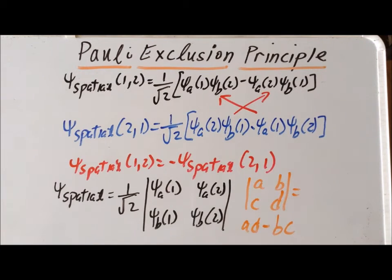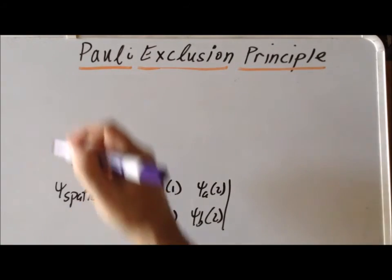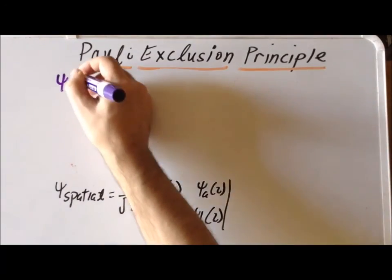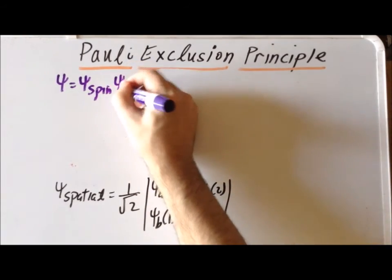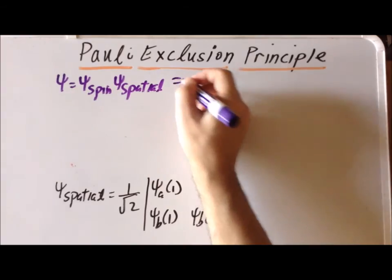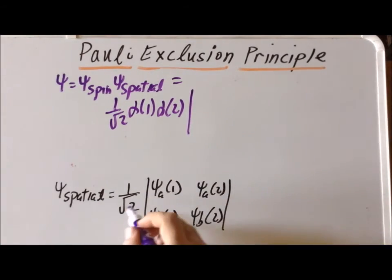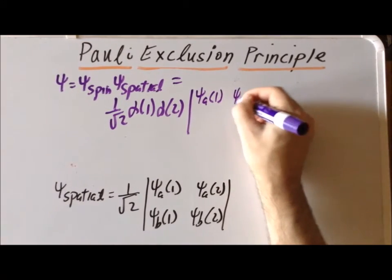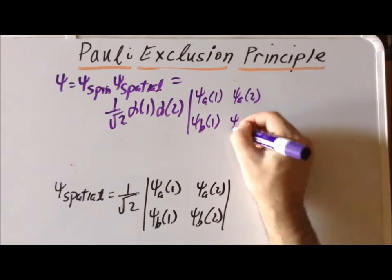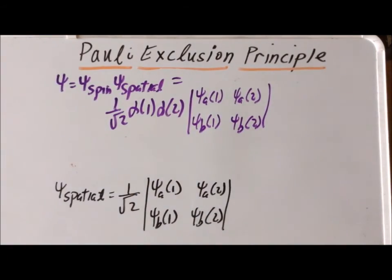Now we have the spatial part of the wave function, and previously we worked out the spin part. We can combine both parts to get an overall valid wave function for two electrons with the same spin. Our overall wave function psi equals the spin part times the spatial part: one over the square root of two times alpha(1) alpha(2) — the spin part — multiplied by the determinant containing psi_a(1), psi_b(1), psi_a(2), psi_b(2). This is our overall valid anti-symmetric wave function where both electrons have the same spin.